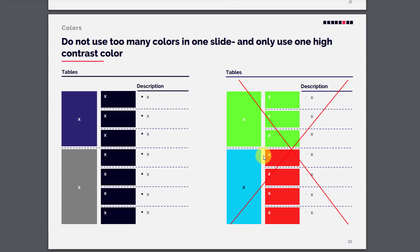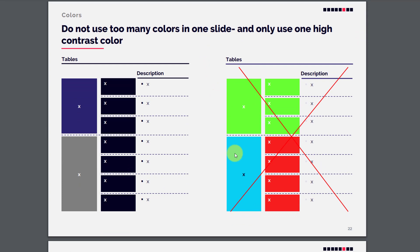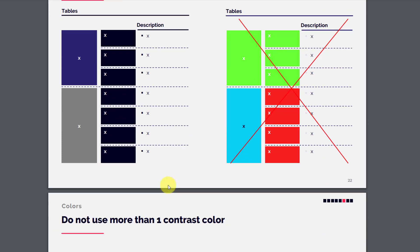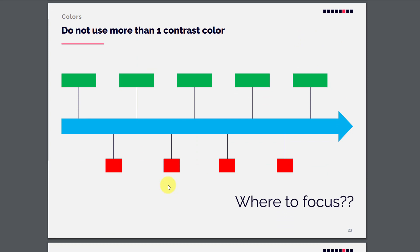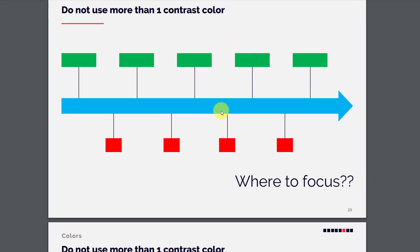Do not use too many colors in one slide. When you use too many colors, the slide loses its focus and you cannot focus on one particular thing. Instead, use accents carefully — this will make the slide look much better.